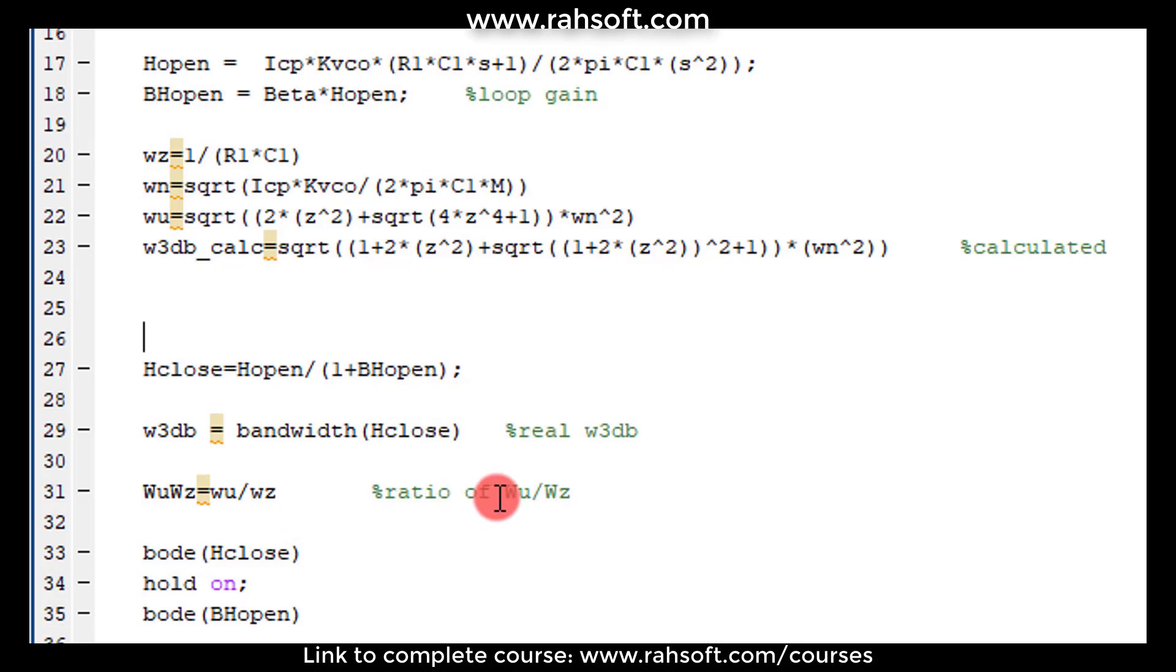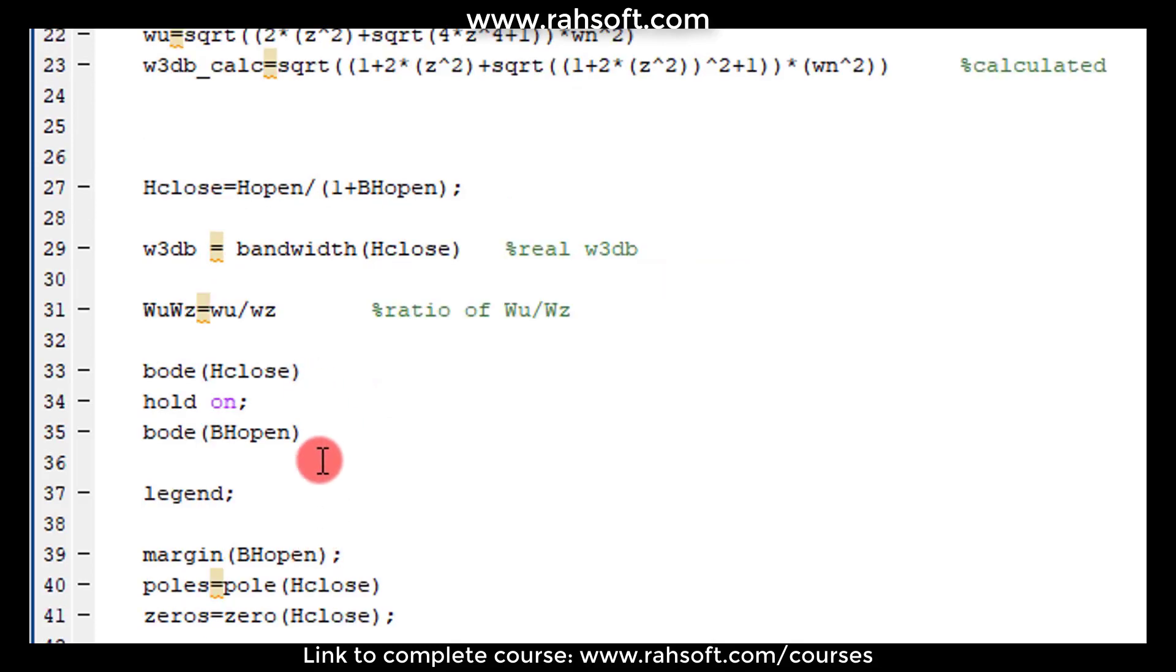This is the ratio of the unity gain bandwidth to zero. I just wrote by myself. You can remove it, doesn't matter. Then I'm doing both plot for closed loop and open loop. Loop gain basically, not open loop because I say beta H open.